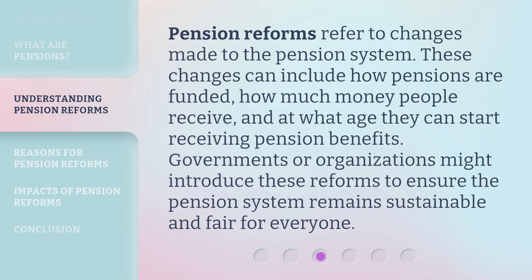Pension reforms refer to changes made to the pension system. These changes can include how pensions are funded, how much money people receive, and at what age they can start receiving pension benefits. Governments or organizations might introduce these reforms to ensure the pension system remains sustainable and fair for everyone.